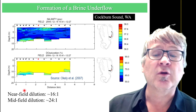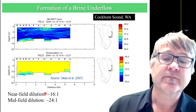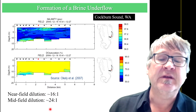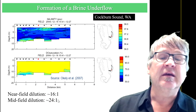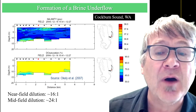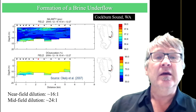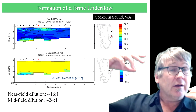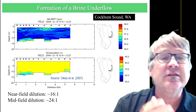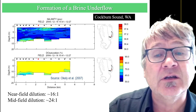You can also work out the dilution from the salinity. Near field is 16 to 1, mid field is 24 to 1, which means that one unit of the discharge is mixed with 16 parts of ambient sea water. From that, if you know what the ingredients in your discharge are, you can work out the resultant concentrations of other pollutants that may be included in the discharge.